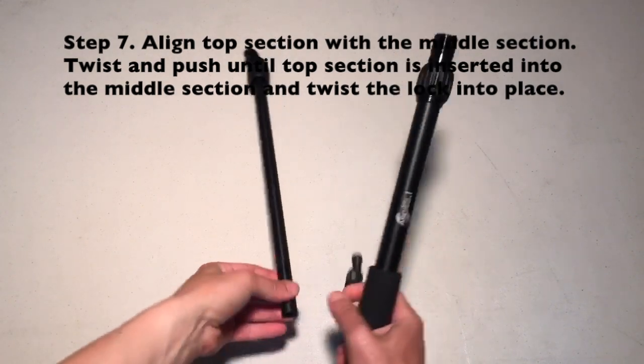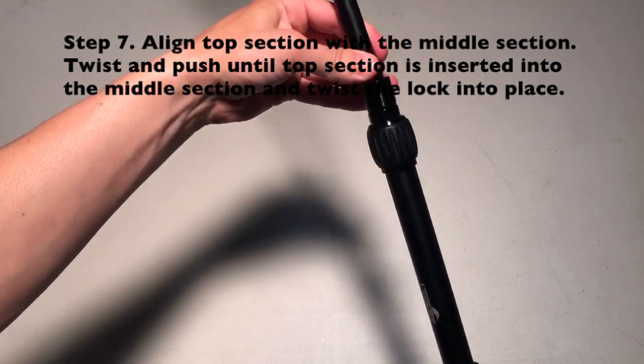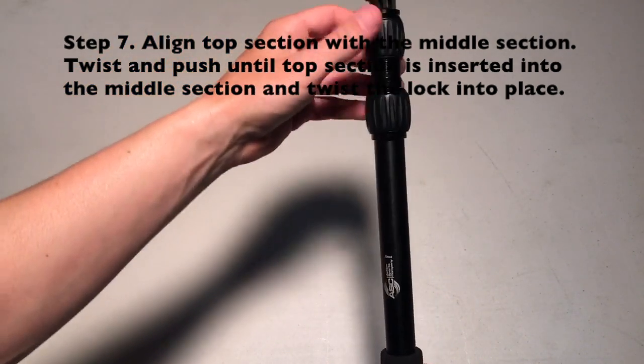Step seven: align top section with the middle section. Twist and push until the top section is inserted into the middle section and twist the locks into place.